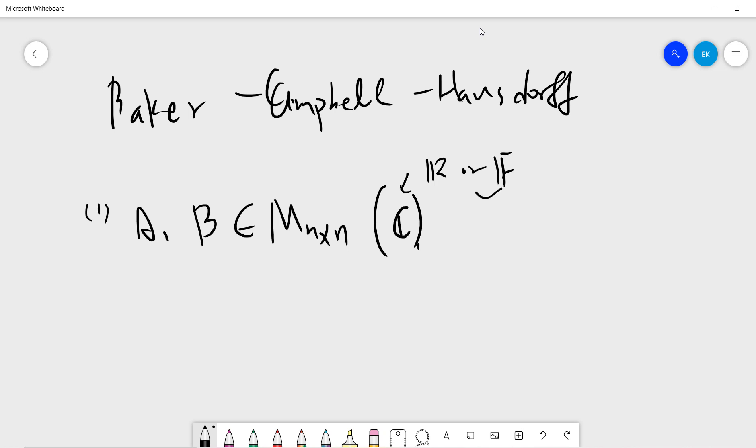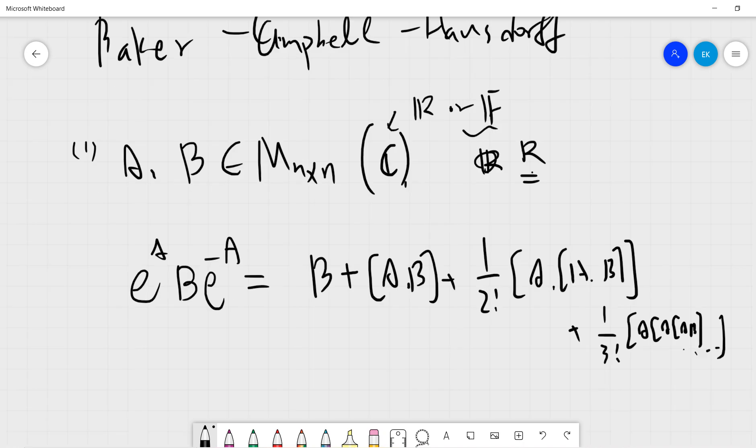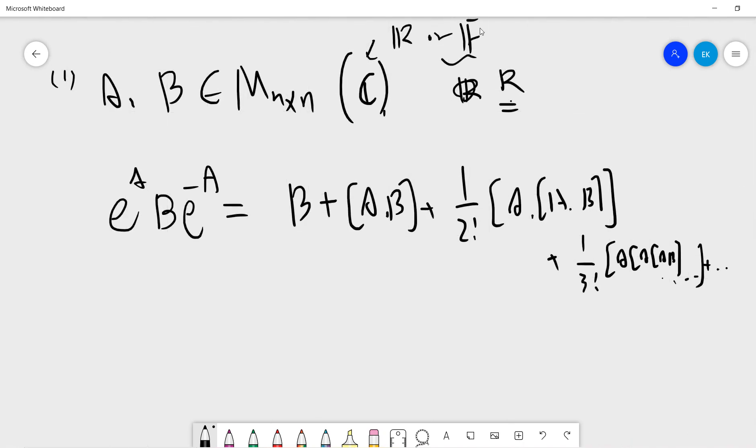Probably the ring is still okay, I mean if you use a commutative ring. Basically you have exponential A, B, exponential minus A, to be B, plus AB, plus a half AAB, and keep going three factorial AAAB, keep going. This is the formula we want to prove.